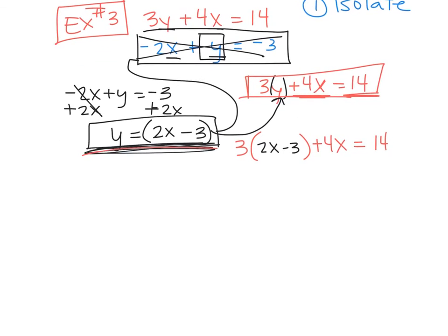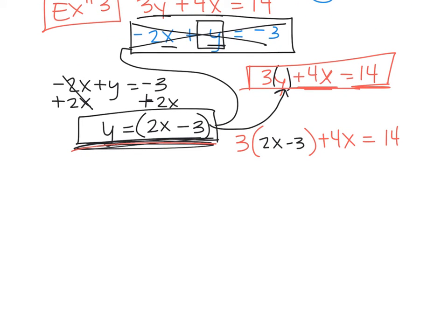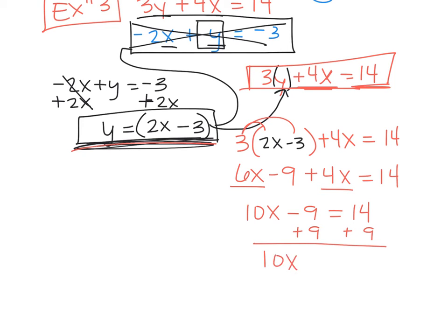Now, from here, you guys know or you should know how to solve that. You're going to simplify and solve for X. So what's my first step to solve for X? You're going to distribute. So it's going to be 6X minus 9 plus 4X equals 14. 6X plus 4X is 10X minus 9 equals 14. What do I do next? Add the 9. So you get 10X equals 23. And then you're going to divide by 10. So you get X equals 2.3.